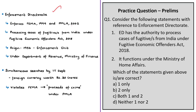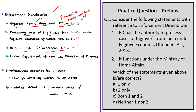The Enforcement Directorate is mandated with enforcing the provisions of two acts: the Foreign Exchange Management Act of 1999 and the Prevention of Money Laundering Act of 2002. As per the Fugitive Economic Offenders Act of 2018, the Enforcement Directorate is also responsible for processing cases of fugitives from India. The Enforcement Directorate has origins since 1956, when an Enforcement Unit was formed under the Department of Economic Affairs under the Ministry of Finance. Its headquarters is in Delhi, and it is presently a specialized financial investigation agency under the Department of Revenue, Ministry of Finance.